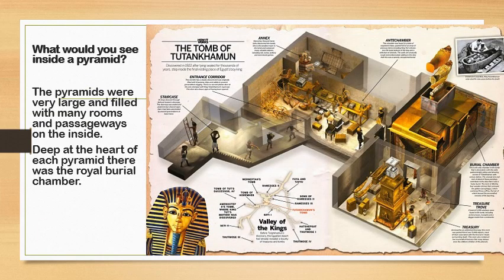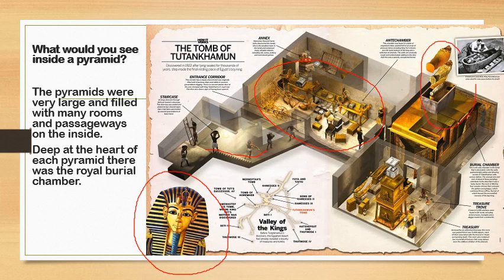This is a drawing of what you would see inside a pyramid — specifically the inside of the pyramid of Tutankhamun, which we are going to discover more about in our next lesson. You can see lots of different rooms and a staircase, and it's showing people inside still building the pyramid. Have a look closely at some of the things inside. You may want to pause the video and see if you can figure out what anything is, and see if you can spot a royal burial chamber. What could that mean?